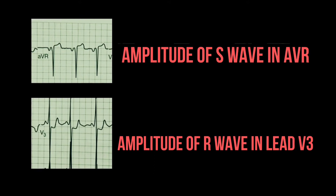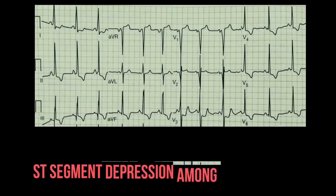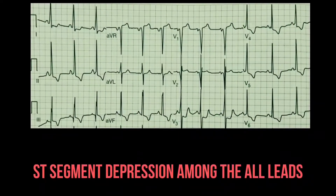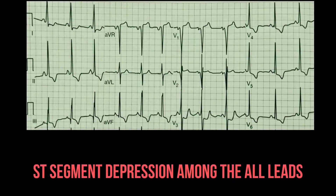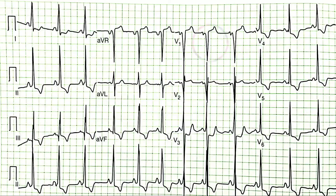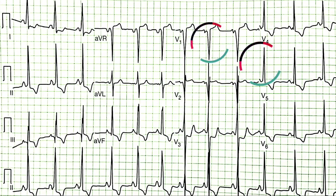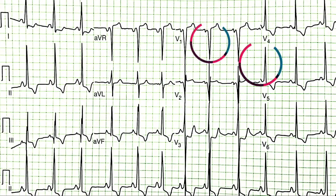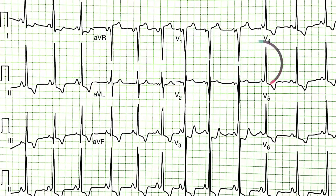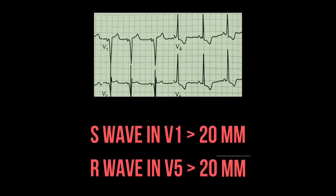Look at leads V3, V4, and V5 — there is ST-segment depression in these leads. The S wave in lead V1 and the R wave in lead V6 both have amplitudes measured to be greater than 20 mm.